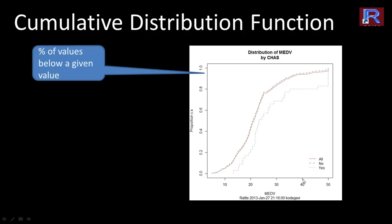The x-axis shows values of 10, 20, 30, 40, 50, and so on. If you draw a line up from 30, it reaches the 80th percentile, which tells you that 80% of the households have a median value of less than or equal to 30. That's what this graph shows.